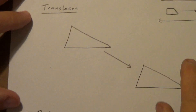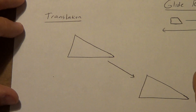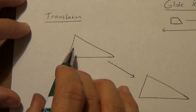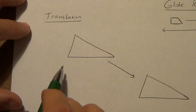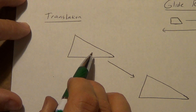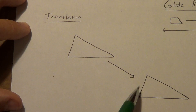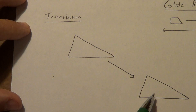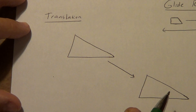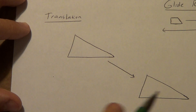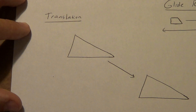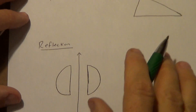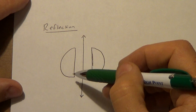Here are a couple of examples. Let's start with translation — remember, it's just a movement: left, right, up, down. I take this shape and slide it down and to the right, and I get this shape. These shapes are supposed to be congruent to each other. If they're not congruent, the translation was done incorrectly.